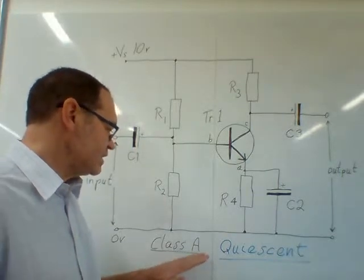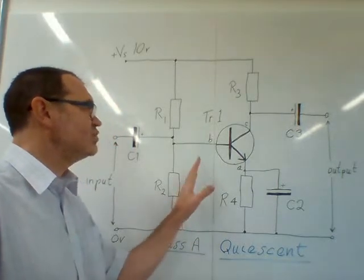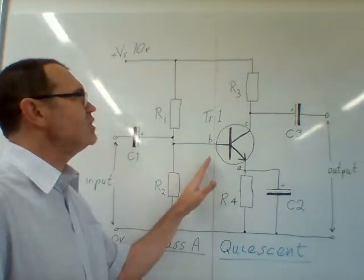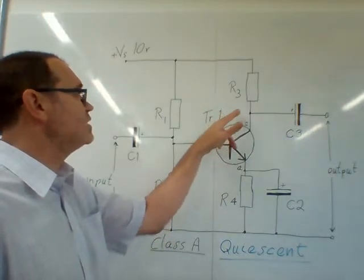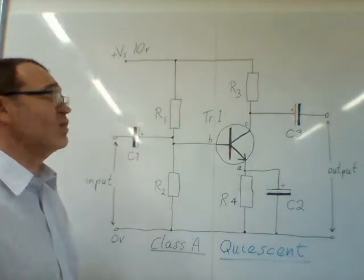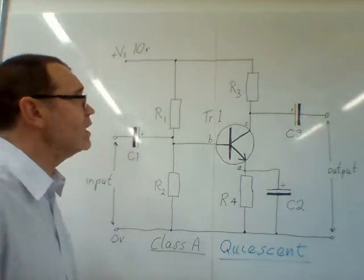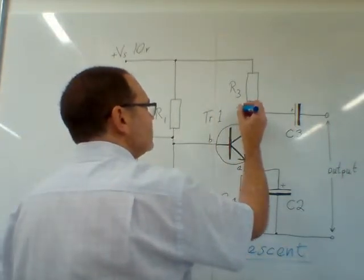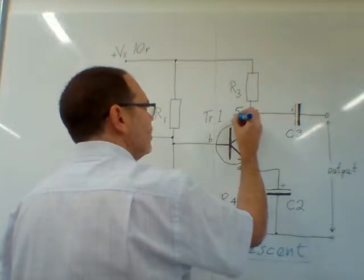Now we're going to assume that this is a class A amplifier, that means the transistor is fully turned on before the signal arrives. Under those circumstances, we would expect to see the collector voltage be around half of the supply voltage. So with a supply voltage of 10 volts, we would hope that the collector voltage was somewhere in the region of 5 volts.